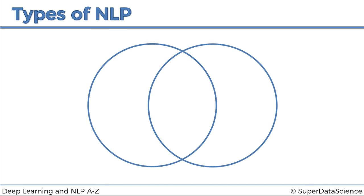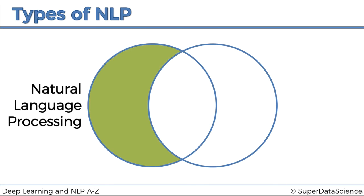and we are going to look at the different areas of natural language processing that are going to come up in this course. On the left we've got natural language processing overall, and this refers to the whole circle on the left.